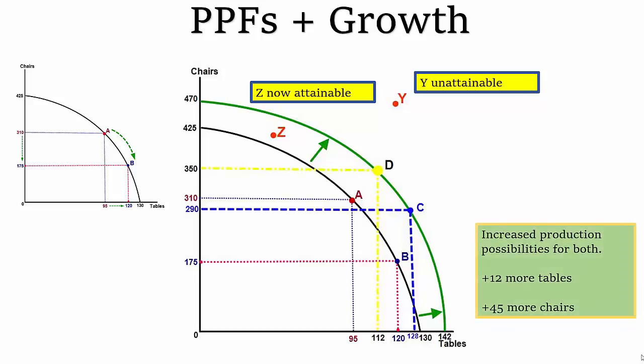The next thing to notice is that there is an increased production possibility for both items, and in this case we're doing chairs and tables still. So we've increased the possible production capacity of tables by 12 and we've increased the possible production capacity of chairs by 45. So we can have more of both possibilities if we have growth by increasing the quality or quantity of a factor of production.